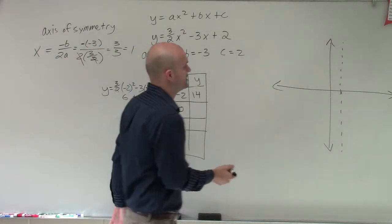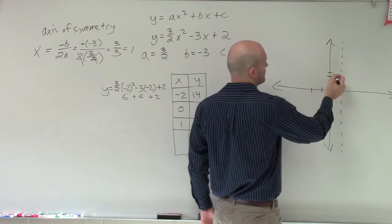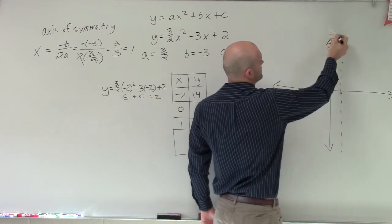So 6 plus 6 plus 2 is going to be 14. So therefore, now I go over to negative 2 and I go up to 14.